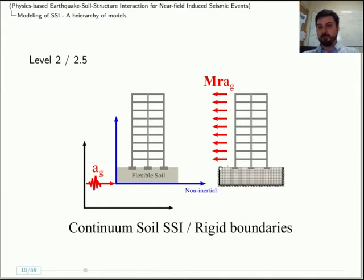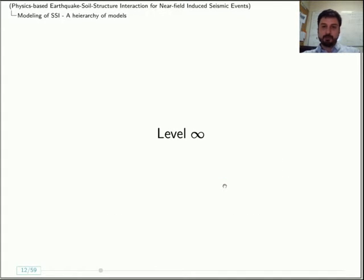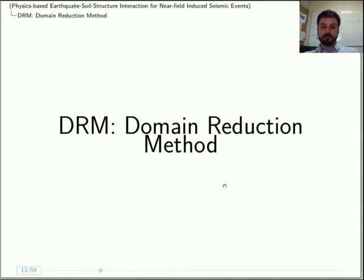The next level up is to continue paying attention to the soil, and you actually go and make it a continuum with rigid boundaries. You can make this linear or non-linear, and the rigid boundaries allow you to still attach this non-inertial frame of reference, and the way to input the record is basically the same. The next level up, though, is to get rid of the rigid boundaries and apply the earthquake as a plane wave approaching into the site.